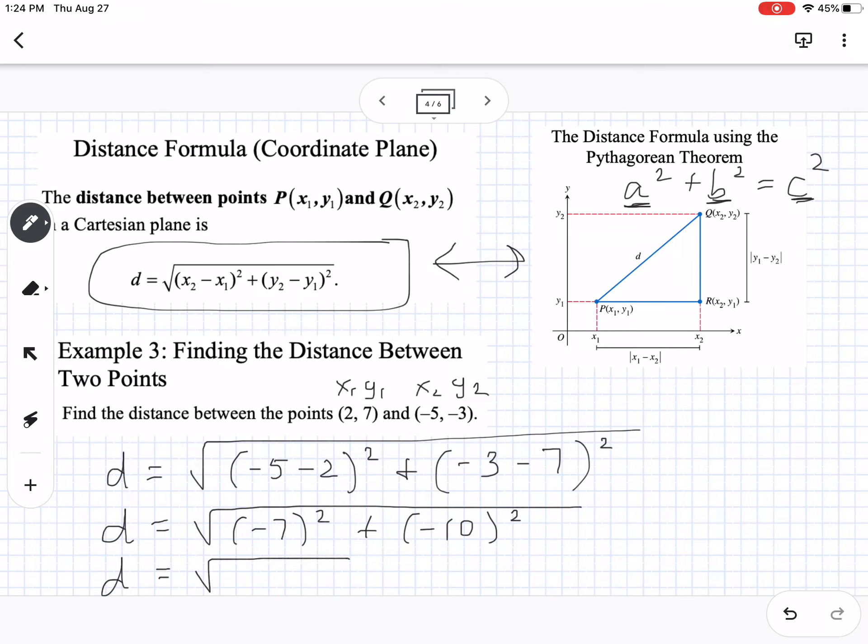So that would be forty-nine plus a hundred, or the square root of a hundred and forty-nine. Or, we can use our calculator here and approximate that, so the square root of a hundred and forty-nine is about twelve point two one.